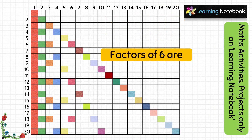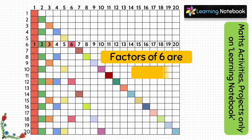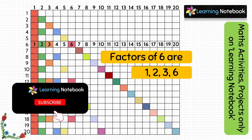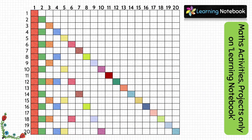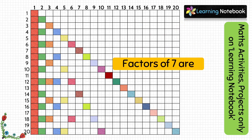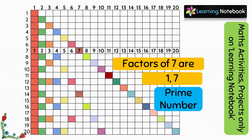Now let us move to row 6. The boxes colored are 1, 2, 3 and 6, so these are the factors of 6. Now we will look at row 7 — only 2 boxes are colored, which are 1 and 7. So these 2 are the factors of 7, and since 2 boxes are colored, number 7 is a prime number.